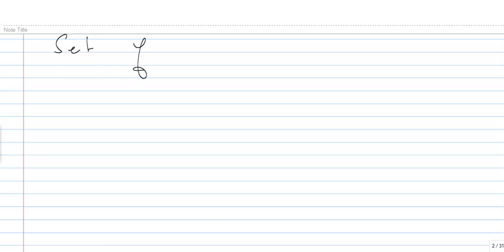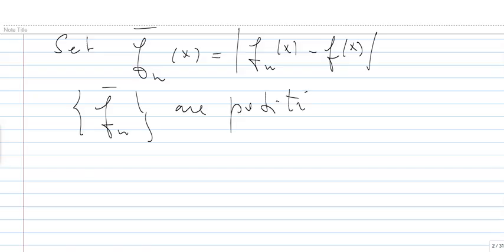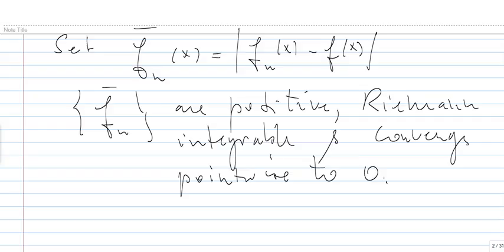For that, we start by the following. First, we set F̄N(x) to be the absolute value of FN(x) minus F(x). So this sequence F̄N: the elements are positive, they are Riemann-integrable, and they converge pointwise to 0.